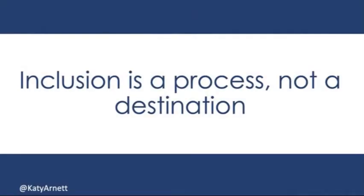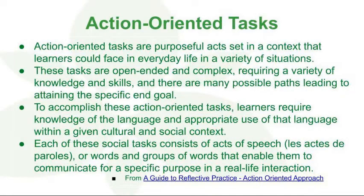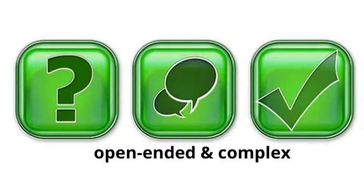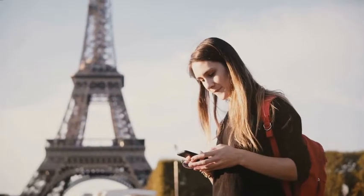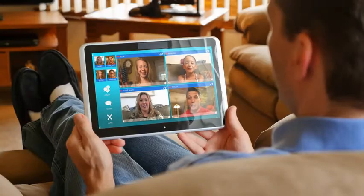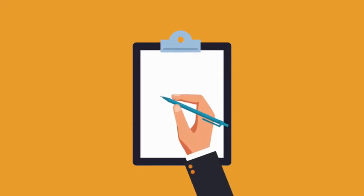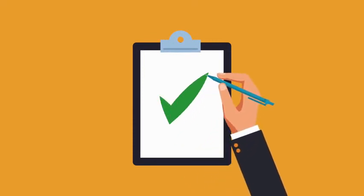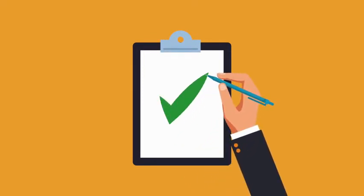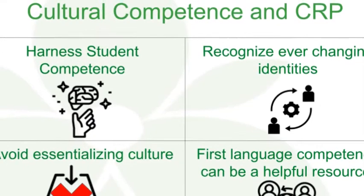It is important to remember this when looking at action-oriented tasks because one of our goals is to help students become more active and take on more autonomy. When considering the parameters of action-oriented tasks, we are reminded that they should be open-ended and complex, and that they must be based on possible real-life social situations. Tasks should set the learner up to act as a social agent who has the goal of successfully completing a specific task for a specific purpose, while still considering factors such as cultural context and social parameters.